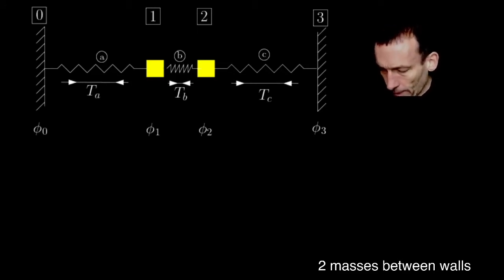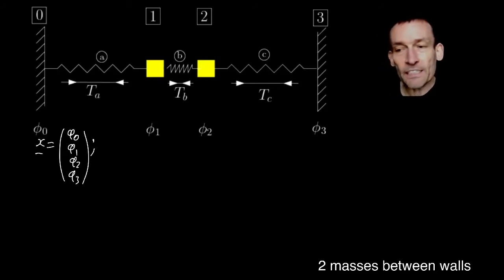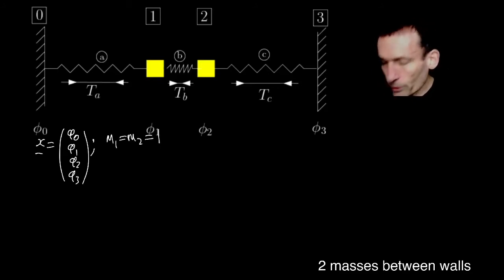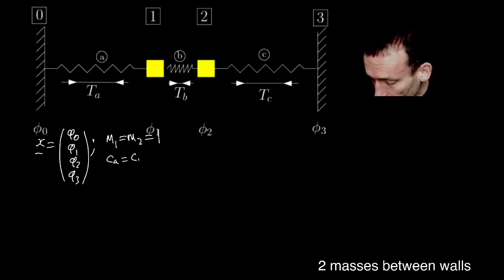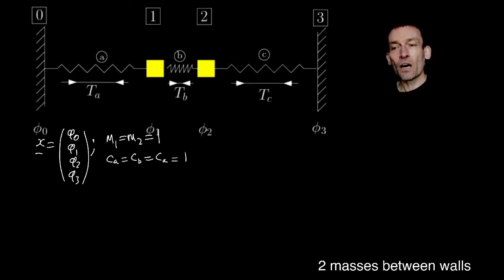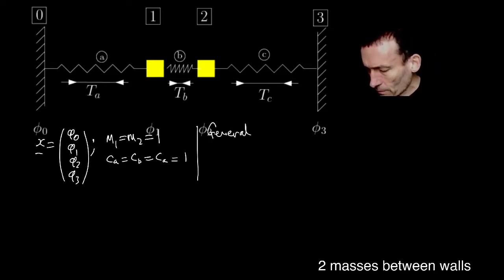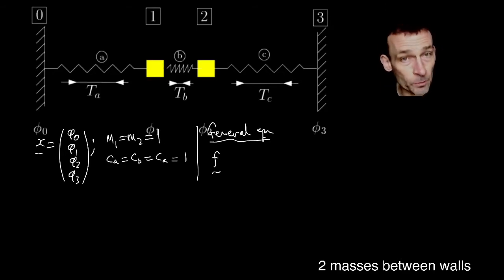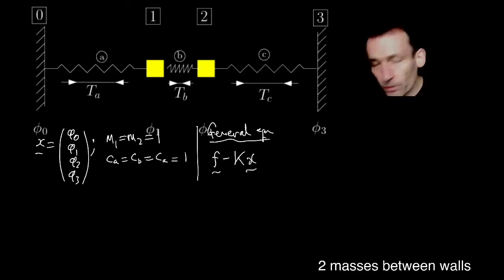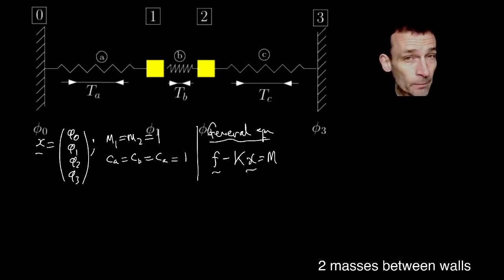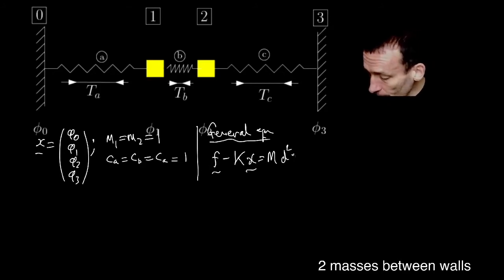Here's our vector of displacements: phi_0, phi_1, phi_2, phi_3. For simplicity, I'm going to assume the masses of 1 and 2 are 1, and let's assume that all of the spring constants are also 1. You remember that the general equation derived in the last lecture — Newton's second law for spring-mass networks — says that the vector of external forces on the masses minus the weighted Laplacian times the displacement vector equals a diagonal matrix of masses times the second derivative of the displacement vector.